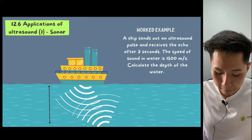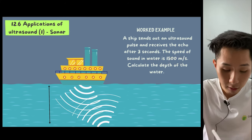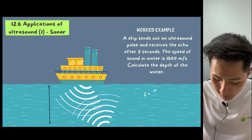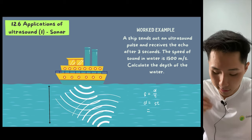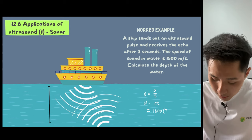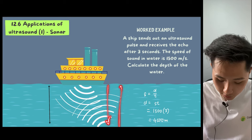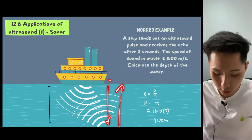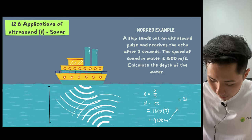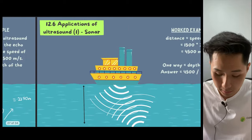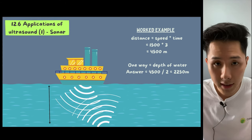Let's try to solve one question. A ship sends out an ultrasound pulse and receives the echo after three seconds. The speed of sound is 1500. Calculate the depth. We can use the formula speed equals distance over time and make distance the subject to find out what is the distance that the sound has traveled. I can use the speed of sound, 1500 multiplied by time, which is three, to get 4500 meters. This distance here will be how much the sound has traveled. But since I want to calculate the depth of water, I only care about one way, so I'm going to divide what I have here by two to get my final answer, which is 2250 meters. That's the first application of ultrasound used to determine the depth of the seabed.